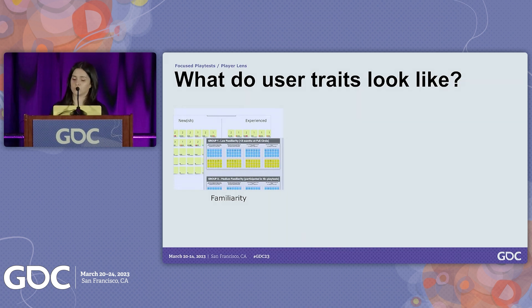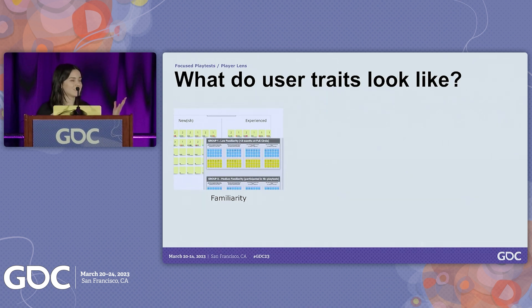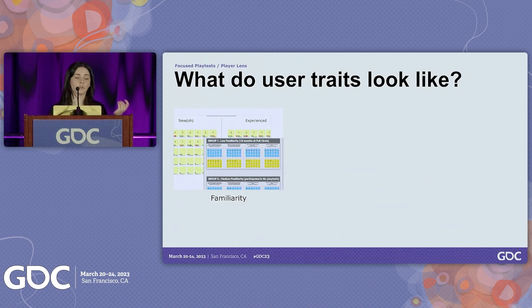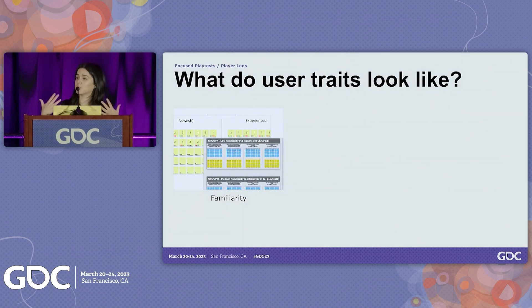Now let's look at user traits. User traits represent different aspects of a player that are relevant to consider for a certain design. An example of a trait is the level of familiarity with a genre or feature — one we use a lot. For our capture tool, we asked the team to give their feedback in different areas of the board depending on whether they were new or more experienced with the tool. For gameplay controls, we asked them to give feedback in areas for low, medium, or high familiarity — and we gave them a proxy: how long you've been on the team maps to your level of familiarity.